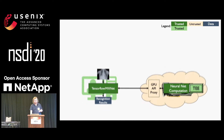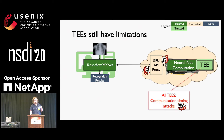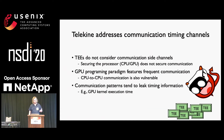TEEs still have limitations, because we have to communicate with the TEE, and that creates the potential for timing channels and timing channel attacks. The bulk of this talk addresses these communication side channel attacks. TEEs don't protect against communication side channel attacks because they don't consider communication as part of their threat model. Communication happens a lot in programs that use the GPU — there's a lot of management of GPU execution and data transfer back and forth, and these communication patterns tend to leak information.